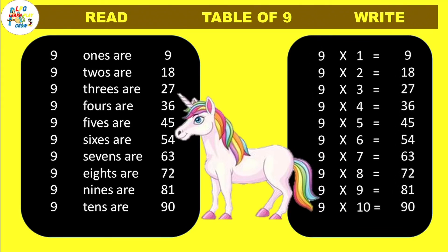9 one's are 9, 9 two's are 18, 9 three's are 27, 9 four's are 36, 9 five's are 45, 9 six's are 54, 9 seven's are 63, 9 eight's are 72, 9 nine's are 81, 9 ten's are 90.